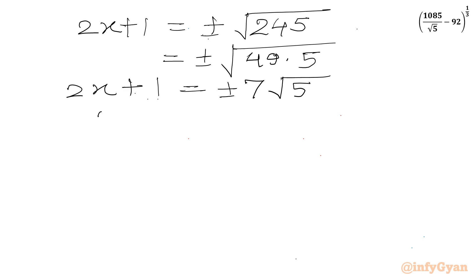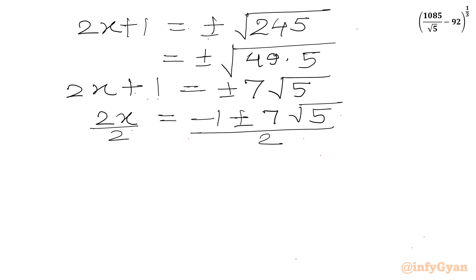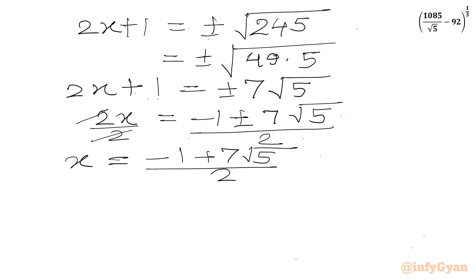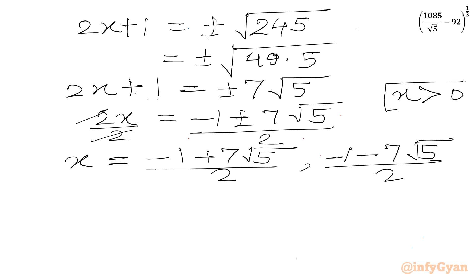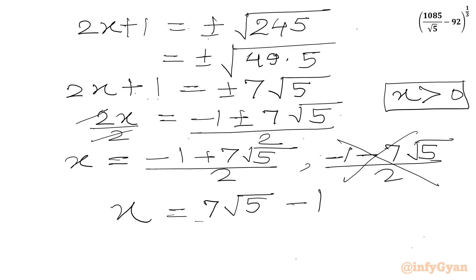Subtracting 1 from both sides and dividing by 2, we get two values of x: the first is (negative 1 plus 7 root 5) over 2, and the second is (negative 1 minus 7 root 5) over 2. But our condition was that x must be positive, so we reject the second solution. Therefore our final answer is x equals (7 root 5 minus 1) over 2.